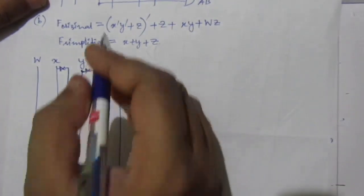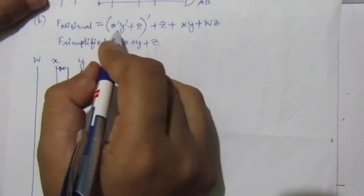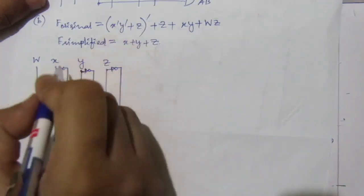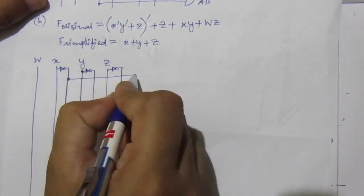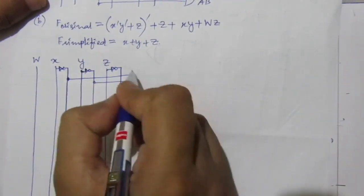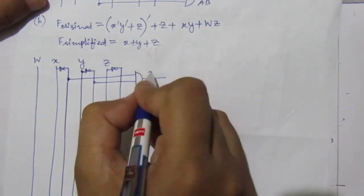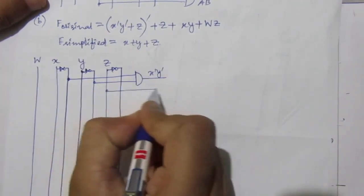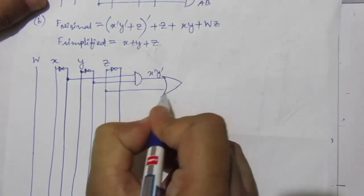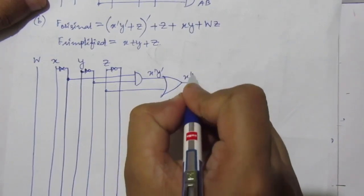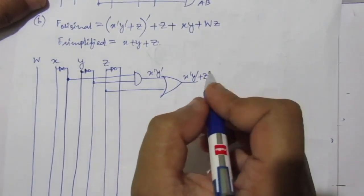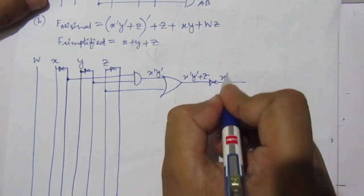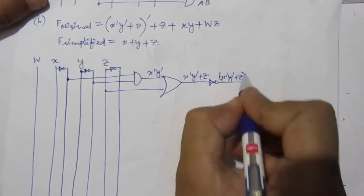For f original: first find x̄·ȳ — x̄ is this line and ȳ is this line, use an AND gate to get x̄·ȳ. Then add z using an OR gate to get x̄·ȳ + z. Then use an inverter to get (x̄·ȳ + z)̄.